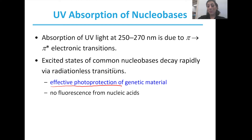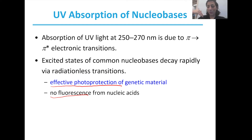What this also means is that nucleic acids do not fluoresce. If they release the energy that is absorbed, they do it without a radiation transition, meaning no light is released. So nucleic acids uniquely do not fluoresce when compared to things like proteins — certain proteins in a cell will fluoresce under types of UV light.